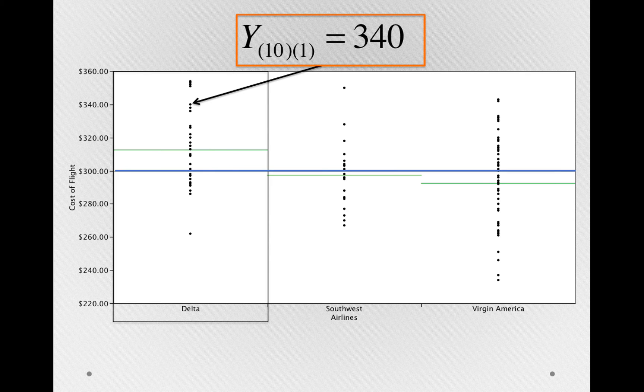Maybe this is Tom. So Tom, in our data set, has a value of 340. And we can, in the bookkeeping of where Tom is, refer to him as Y_11. Again, this is simply a way of keeping track of where individuals are and what groups they're a member of.